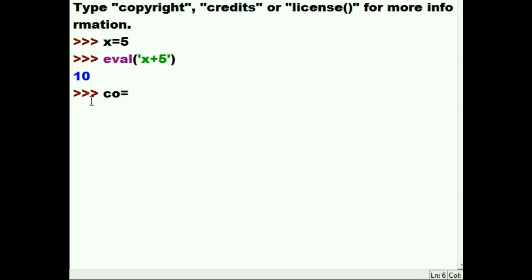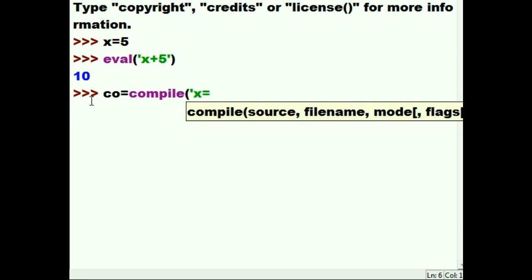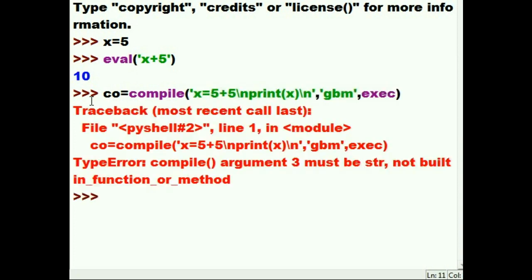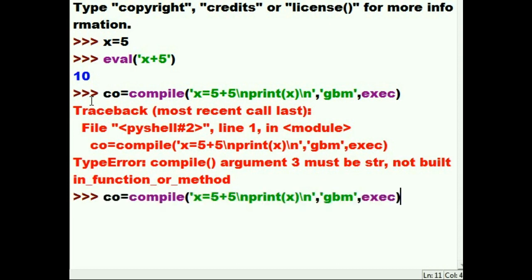The variable 'co' will hold the return from the compile function, which takes the string 'x = 5 + 5', then a newline, then 'print(x)', then ends there. Those are our two commands: x = 5 + 5 and print(x). I give it a module name as a string — 'gbm' (George Bool Module) — and it will be executed using the exec command. I forgot to wrap it in a string, but with that fix, dollars to donuts this works — and it does.